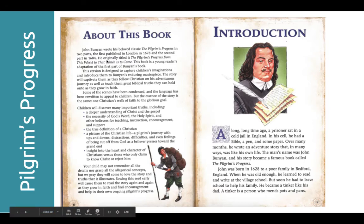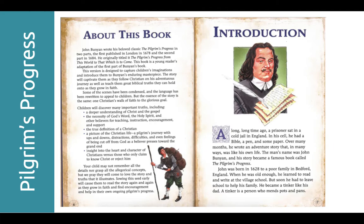Here's the introduction, starting with 'About This Book.' John Bunyan wrote his beloved classic The Pilgrim's Progress in two parts — the first published in London in 1678, and the second part in 1684. He originally titled it The Pilgrim's Progress from This World to That Which Is to Come. This book is a young reader's adaptation of the first part — there's an adult version written in old English, but this one is at more of a fifth grade level, designed to capture children's imaginations and introduce them to Bunyan's enduring masterpiece.